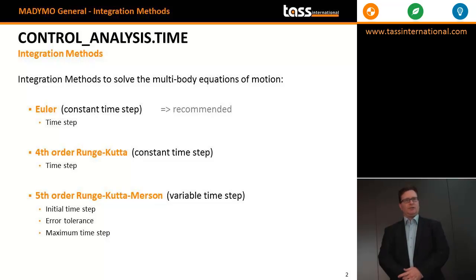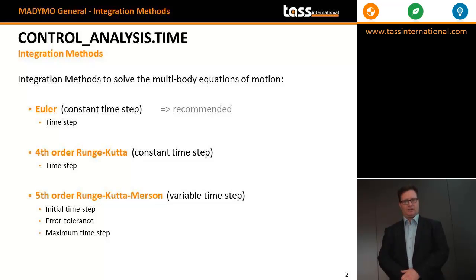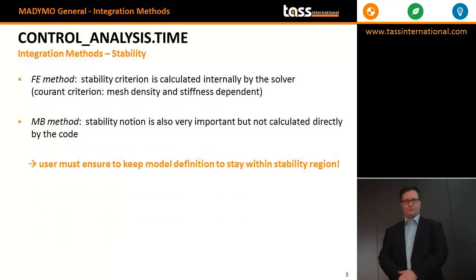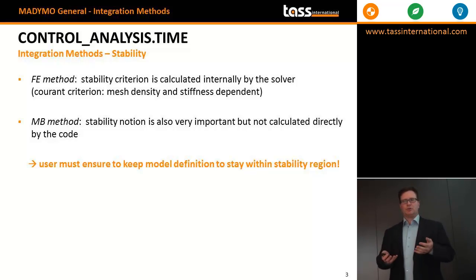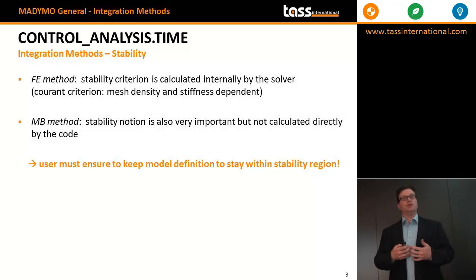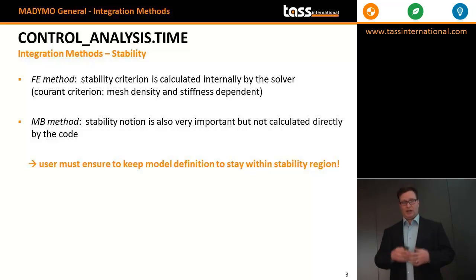Since Manimo is generally a simulation with combined multibody and FE components, it is strongly recommended to use the Euler time integration method with a time step that is small enough. Selecting a proper time integration method and a proper time step is a balance between accuracy and stability. As a user you would like to use the largest possible time step, but that could cause an inaccurate or even unstable calculation if the time step is outside the stability boundaries of the integration method.